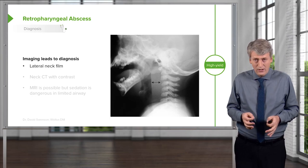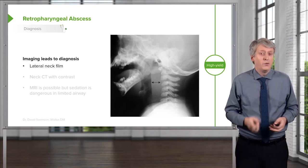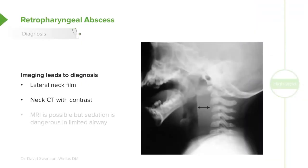This can also be falsely positive if the neck is not extended — and remember, they don't want to extend their neck because it hurts. A neck CT is done when we suspect a problem, and almost always before going to the operating room for drainage. We need the CT to understand exactly where the problem is, what parts to drain, and how best to approach the abscess. MRI would be ideal but is typically avoided because these patients have a tenuous airway and sedation is dangerous in a limited airway.